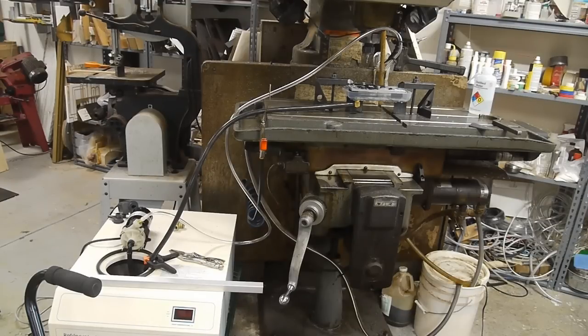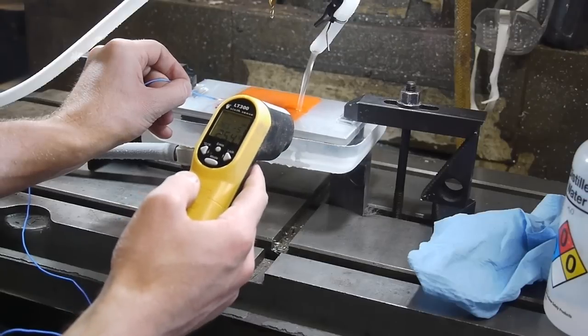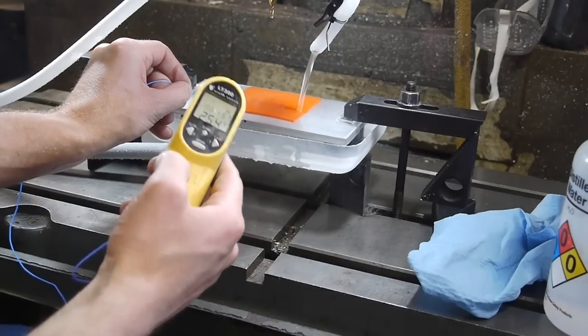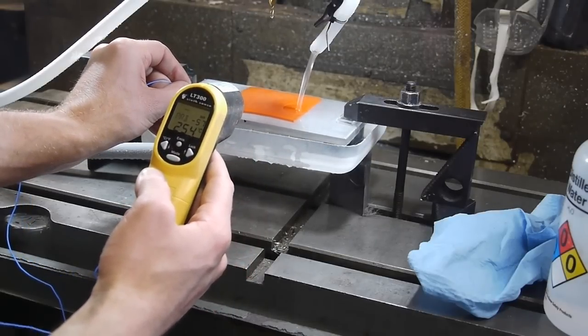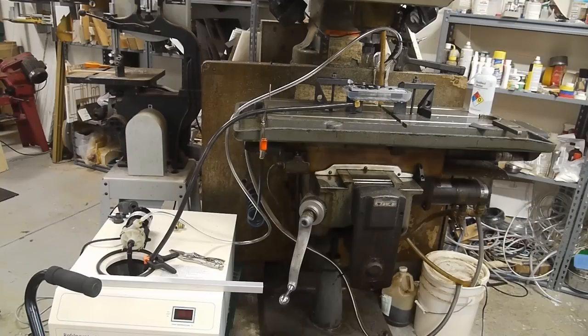The freezer maxes out at just over negative 100 degrees C however the coolant temperature is probably more in the neighborhood of negative 60 to negative 80. You don't actually need a cryogenic freezer to do this, you just need a bucket with dry ice and some alcohol and you'll get very similar temperatures.